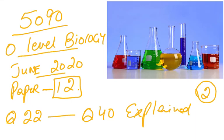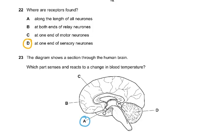5090 O-Level Biology, June 2020. This is paper 1-2, and this is the second part which is questions 22 to 40 explained. Bismillahirrahmanirrahim, we start with question 22.